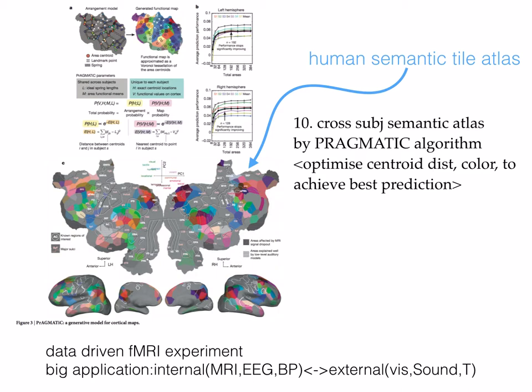This is the final atlas. As you can see, in the parietal blob, in the middle there is some red, meaning it processes social-related information. Surrounding it is some purple, meaning mental-related information. There are also some green parts related to location processing.